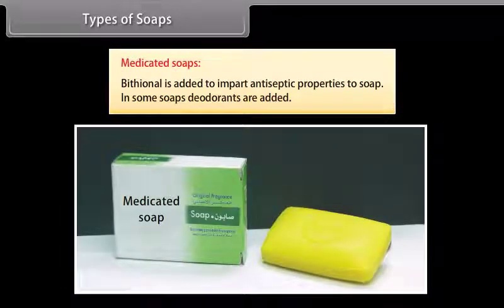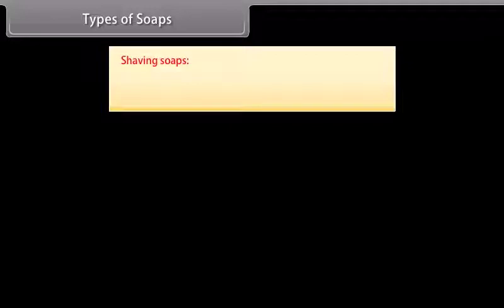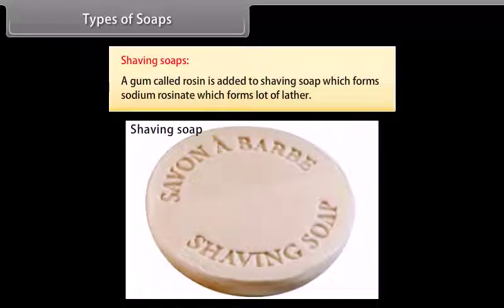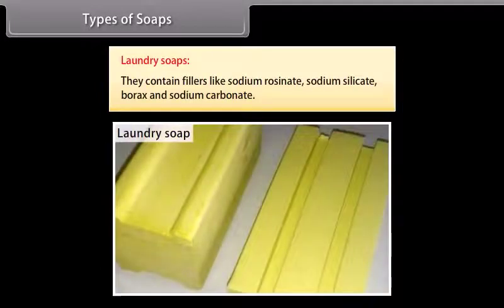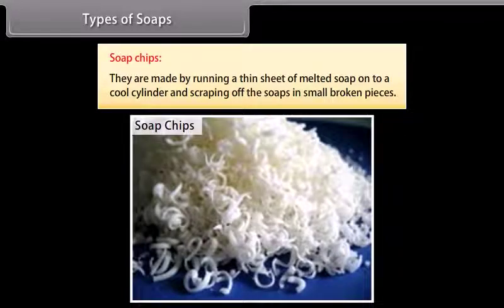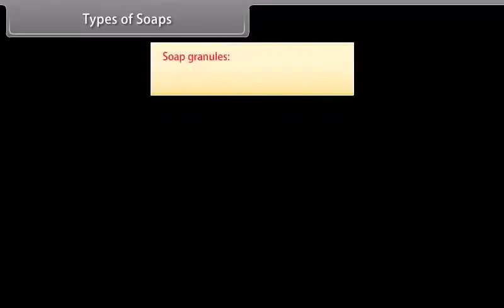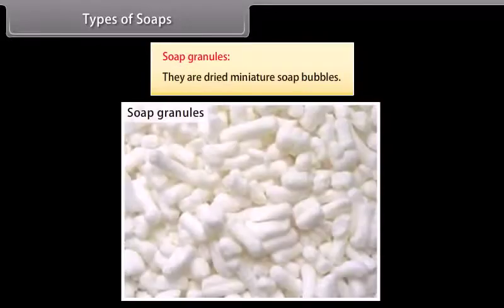Medicated soaps: bithionol is added to impart antiseptic properties; in some soaps, deodorants are added. Shaving soaps: a gum called rosin is added, which forms sodium rosinate and produces a lot of lather; glycerol is also added to prevent drying. Laundry soaps contain fillers like sodium rosinate, sodium silicate, borax, and sodium carbonate. Soap chips are made by running a thin sheet of melted soap onto a cool cylinder and scraping off small broken pieces. Soap granules are dried miniature soap bubbles.